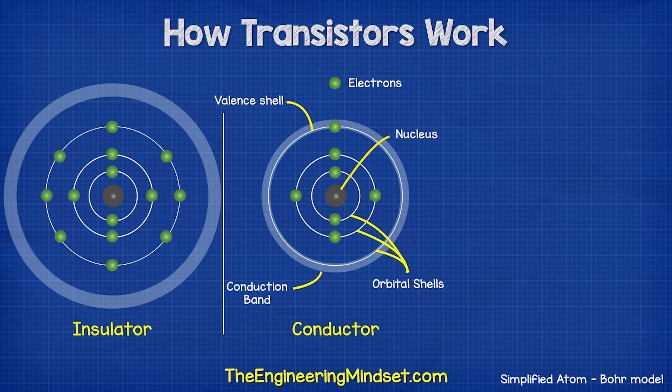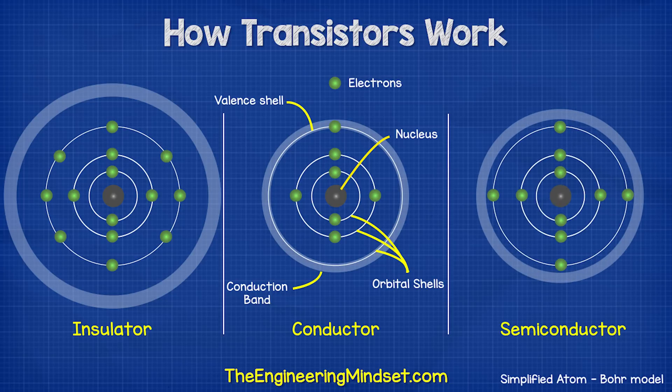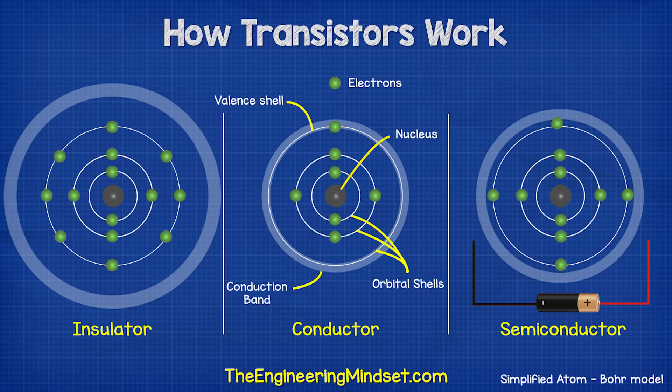However, there's another material known as a semiconductor. Silicon is an example of a semiconductor. With this material, there's one too many electrons in the valence shell for it to be a conductor, so it acts as an insulator. But as the conduction band is quite close, if we provide some external energy, some electrons will gain enough energy to make the jump into the conduction band and become free. Therefore, this material can act as both an insulator and a conductor.